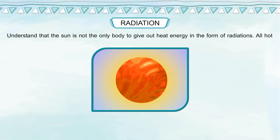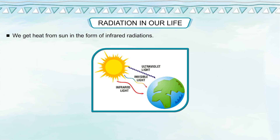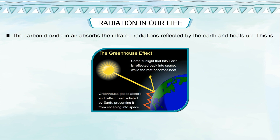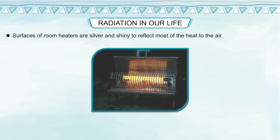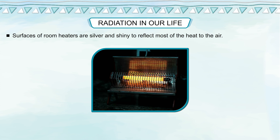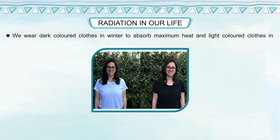The sun is not the only body to give out heat energy in the form of radiations — all hot bodies give out infrared radiations. Radiation in our lives: We get heat from the sun in the form of infrared radiations. Carbon dioxide in air absorbs the infrared radiations reflected by the earth and heats up — this is called the greenhouse effect and it keeps the earth warm. Solar heaters and solar cookers absorb infrared radiations of the sun to heat substances. Surfaces of room heaters are silver and shiny to reflect most of the heat to the air. We wear dark-coloured clothes in winter to absorb maximum heat and light-coloured clothes in summer to reflect maximum heat.